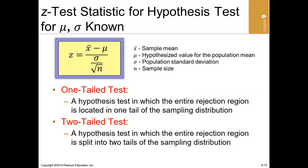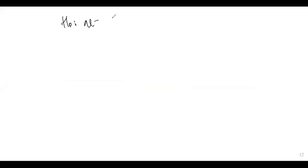Let's start with the first approach and understand the meaning of a one-tailed test and a two-tailed test. For instance, if a null hypothesis says that the average is equal to 50, and the alternative says that the average is not equal to 50.